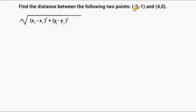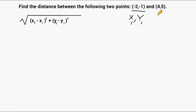In the problem, this is the first point given. We know that ordered pairs are given in x, y order, so we are going to consider this our first x and our first y — calling them x1 and y1. Because this is our second x and y pair, we will call the number 4 our x2, and we will call the number 5 our y2. So now we know where to put each one of our values inside the formula.